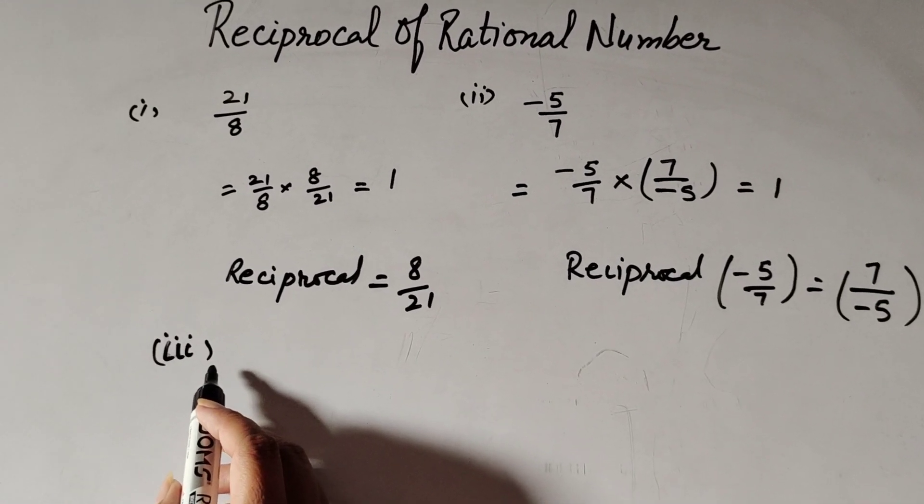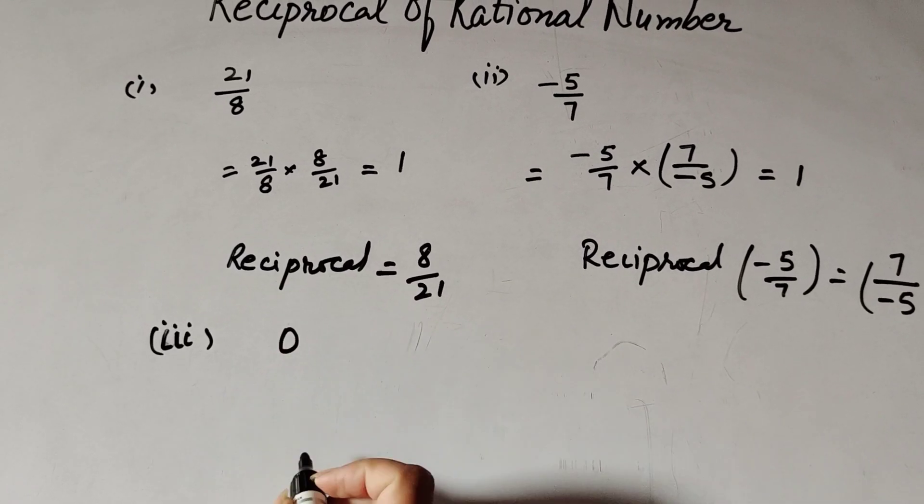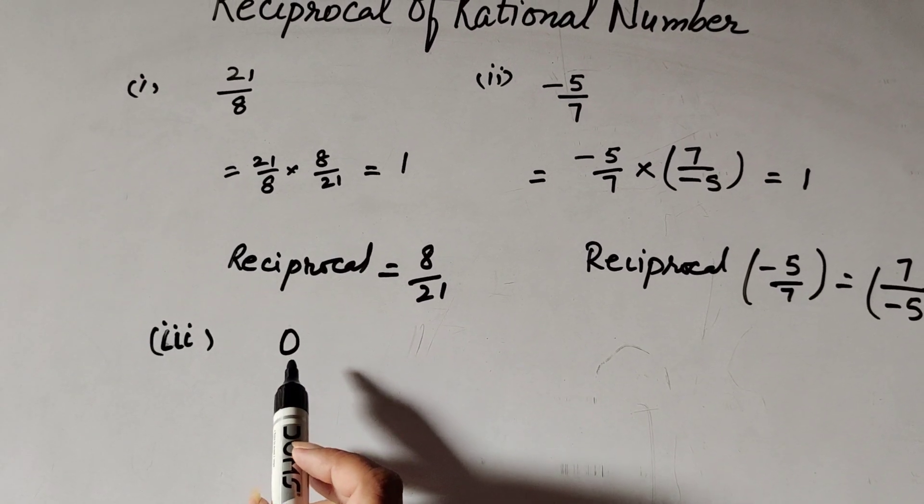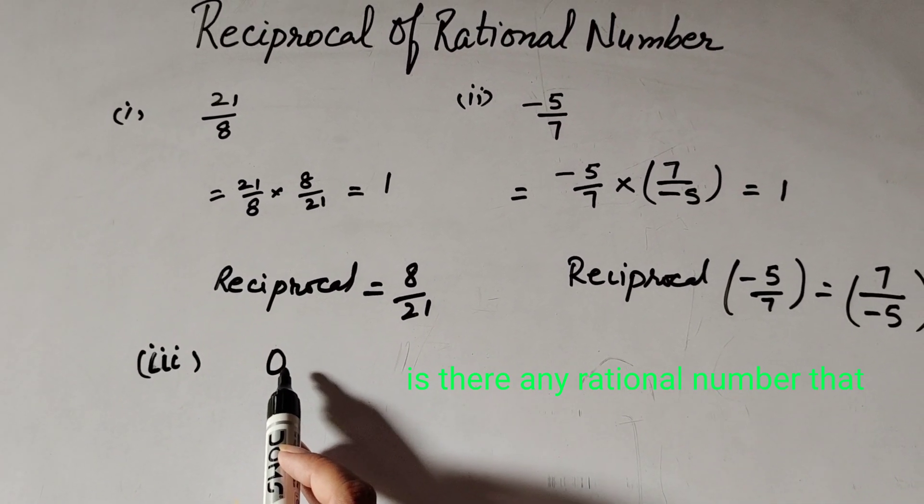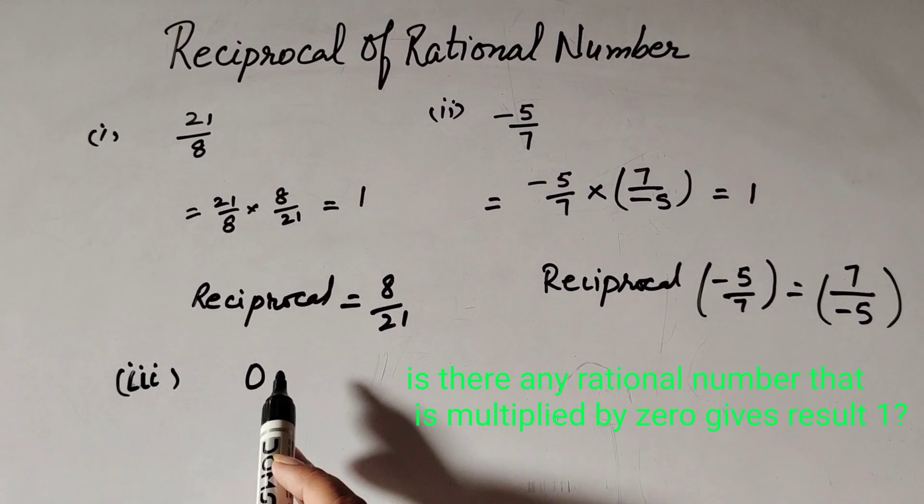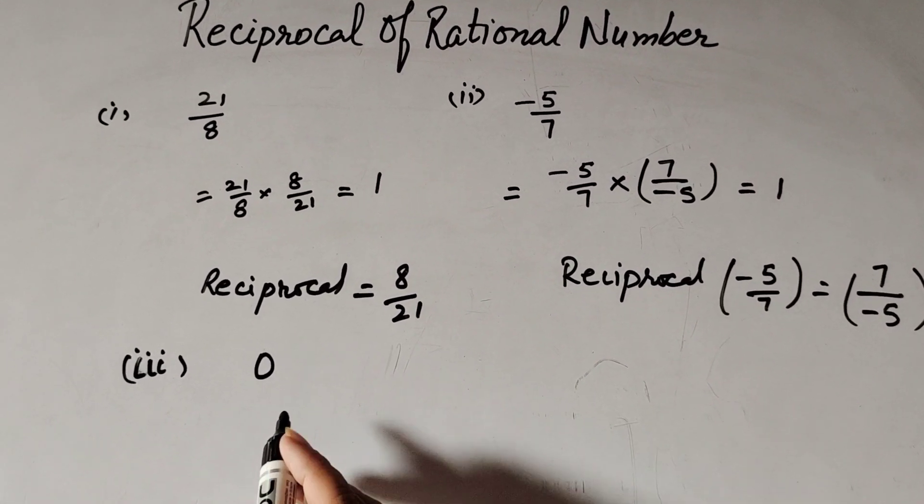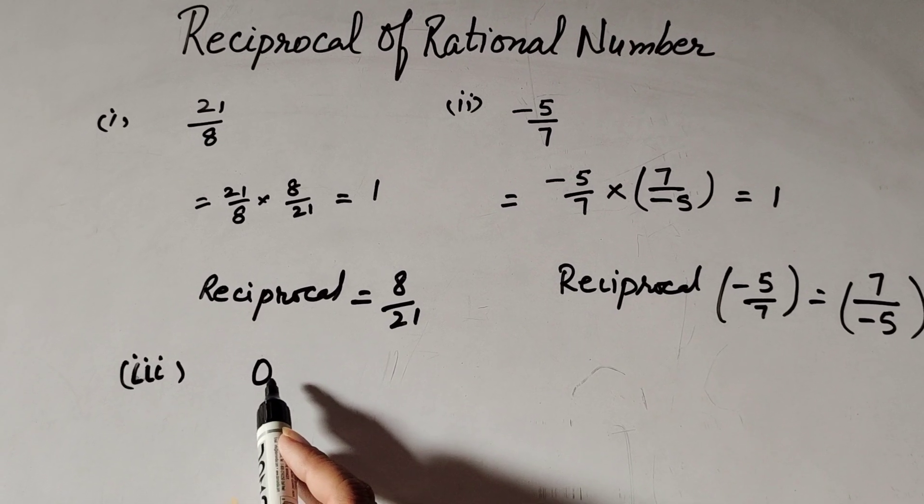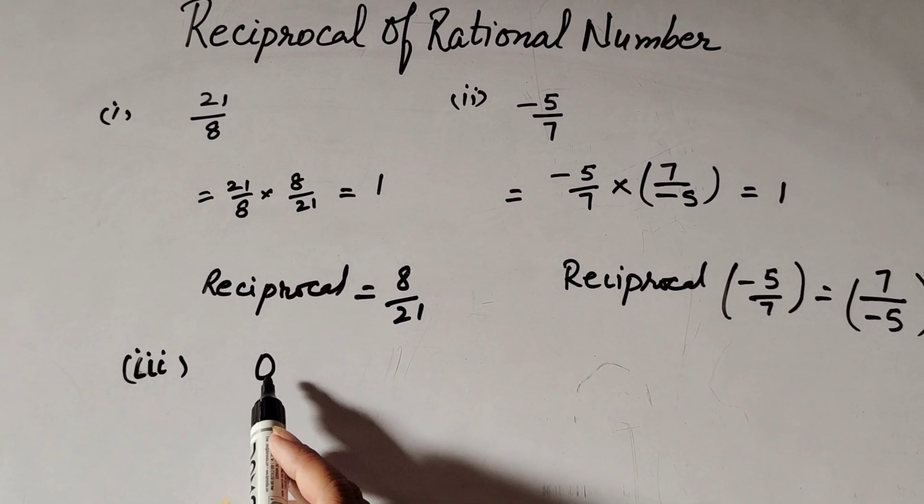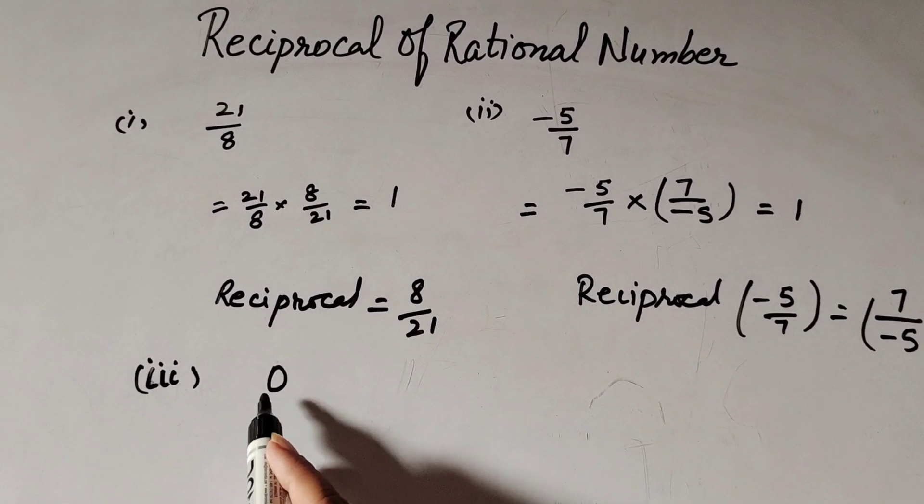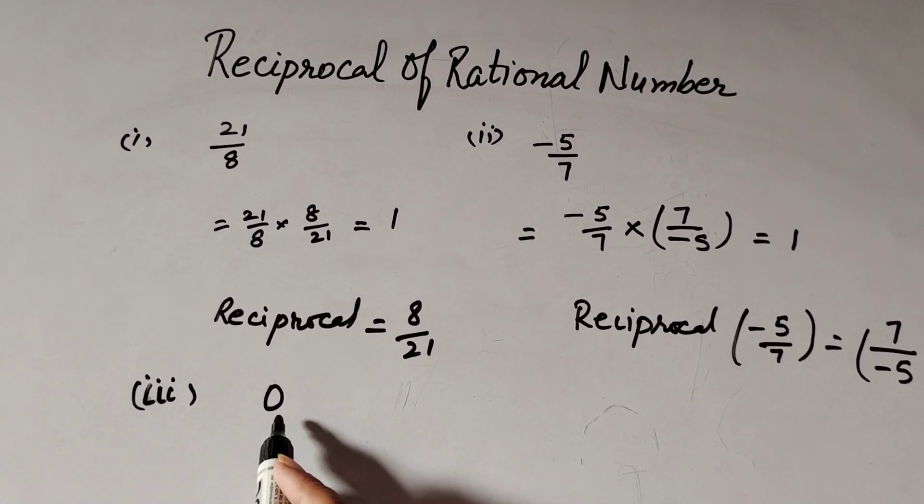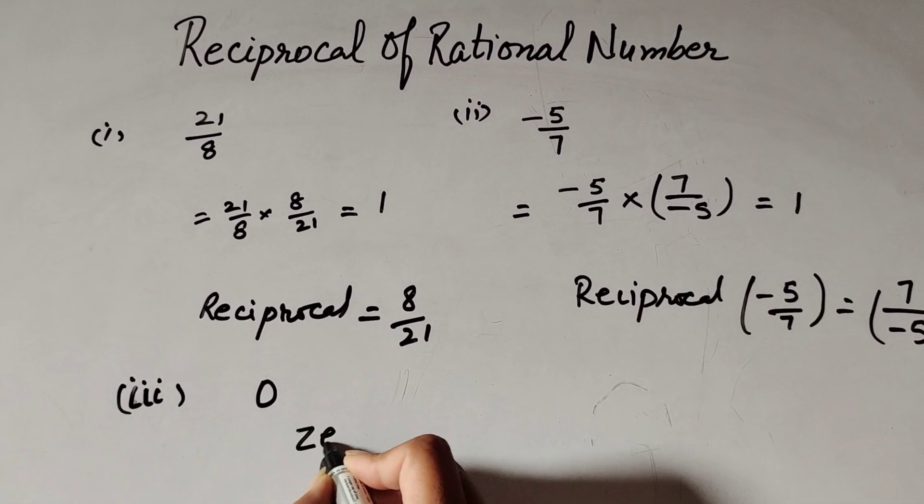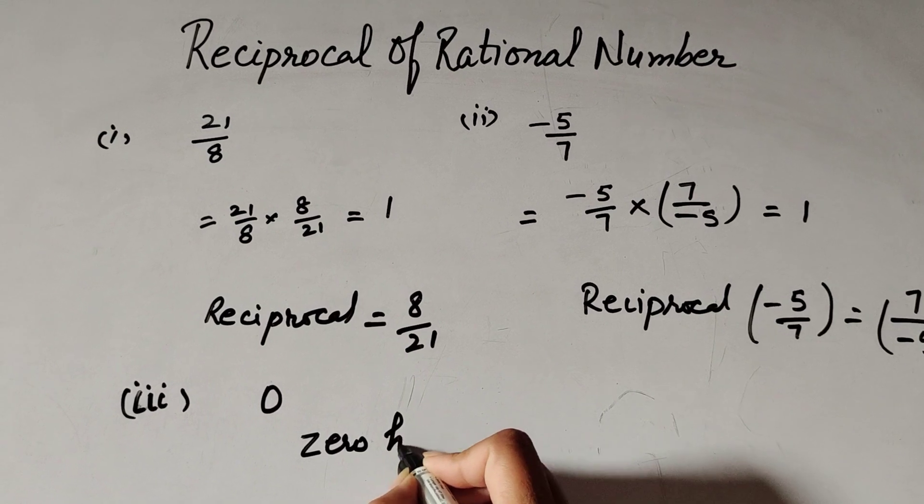In question number 3, there is a number 0. 0 is also rational number. So we have to find its reciprocal. Is there any rational number that is multiplied by 0? We get answer 1. The answer is no. Because when 0 is multiplied by any number, we get answer 0. So 0 has no reciprocal.